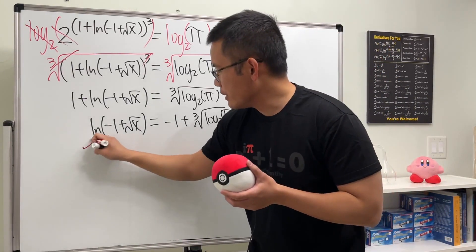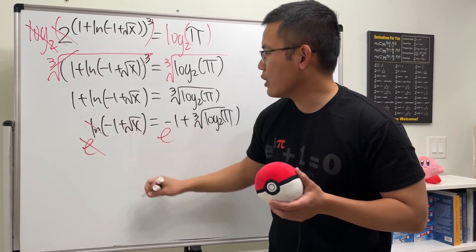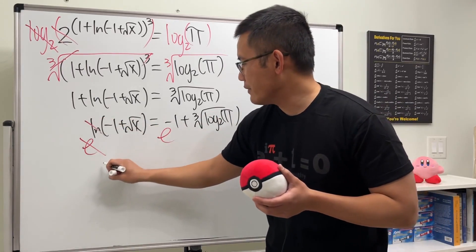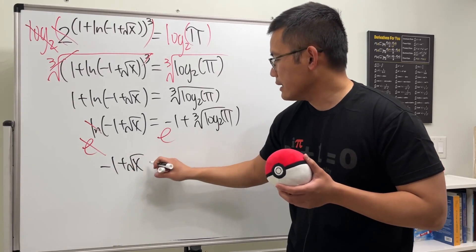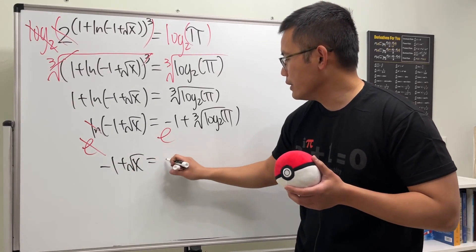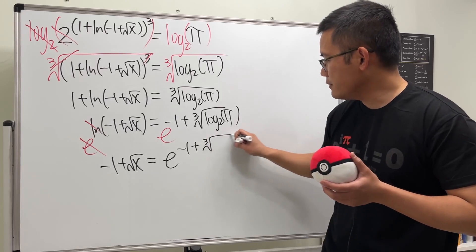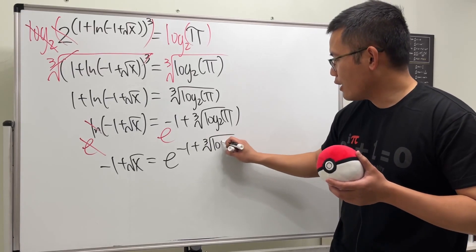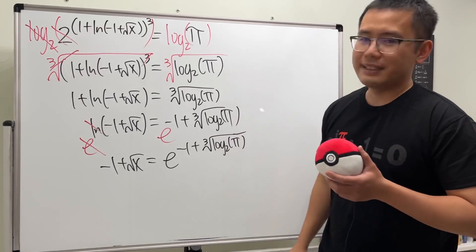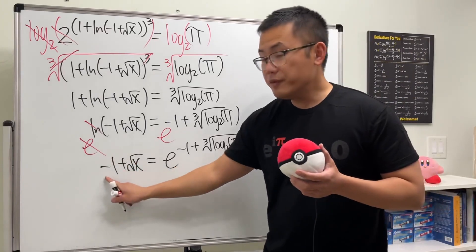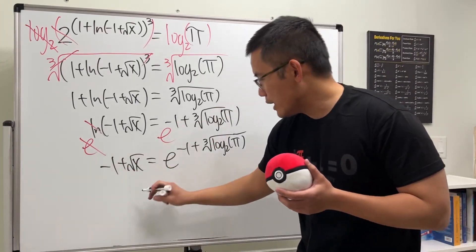We apply e to the power on both sides — e to the ln cancels — and we have negative one plus square root of x equal to e to the quantity negative one plus the cube root of log base 2 of pi.